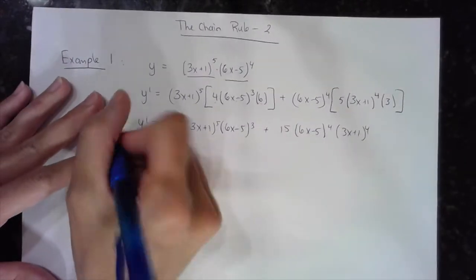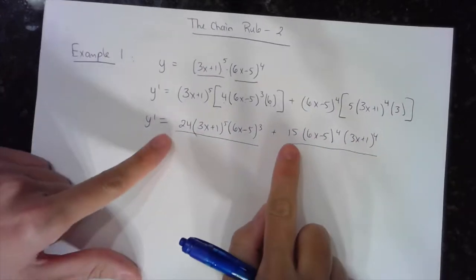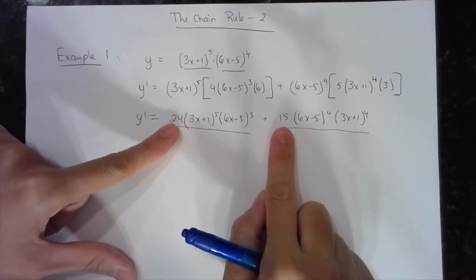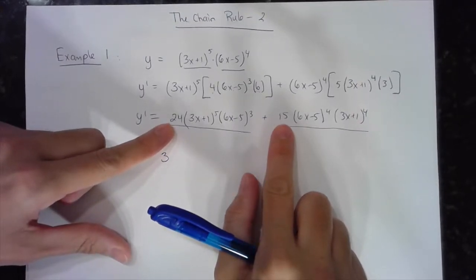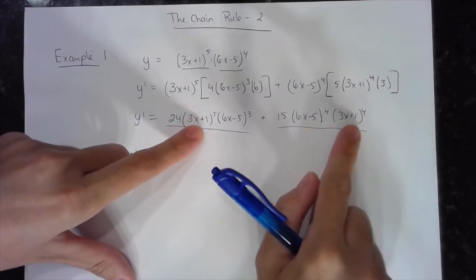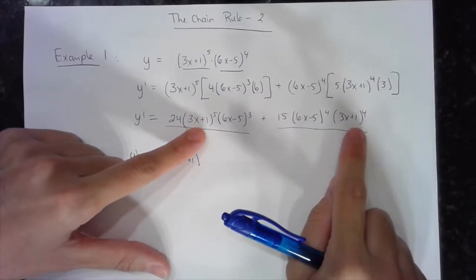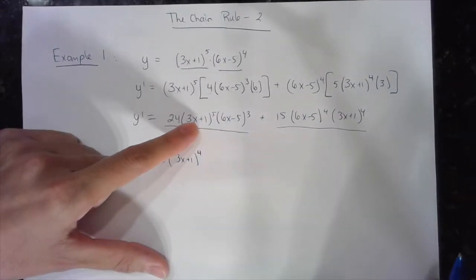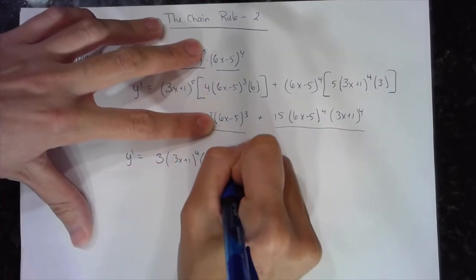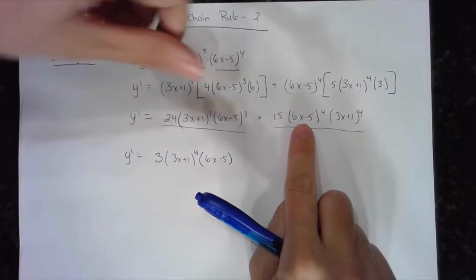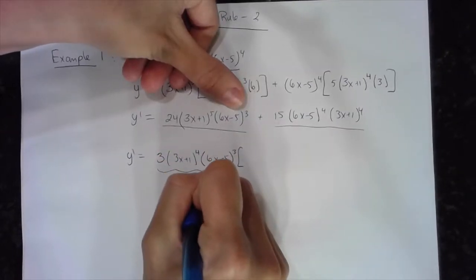Now here's my GCF. Starting with the numbers: 24 and 15 are both divisible by 3, so I take a 3 out. Both terms also have a (3x + 1) — this one has exponent 5, this one has 4 — so I take out the smallest, which is 4. Both terms also have a (6x - 5) in common, so that's part of my GCF. This term has 3 of them and this term has 4, so I take out 3 of them.